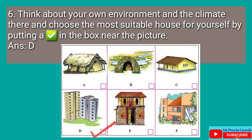Sixth question: Think about your own environment and the climate there, and choose the most suitable house for yourself by putting a tick mark in the box near the picture. The answer is D, because we live in Mumbai. Here in Mumbai, most of the time we see buildings, so a building is suitable for myself.